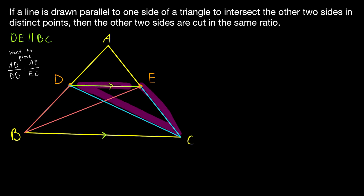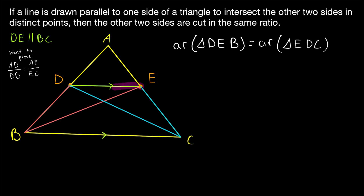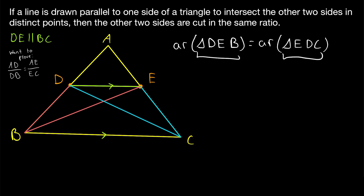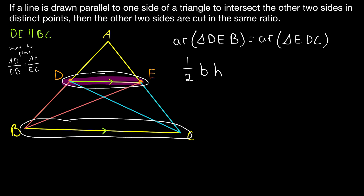Is there any useful relationship between these two triangles? As it turns out, there is. The area of triangle DEB must equal the area of triangle EDC. Both triangles share the same base DE, and their third vertices lie on line BC, which is parallel to DE. So these are two triangles with the same base between the same parallels, and such triangles must have the same area, since area equals one-half base times height.